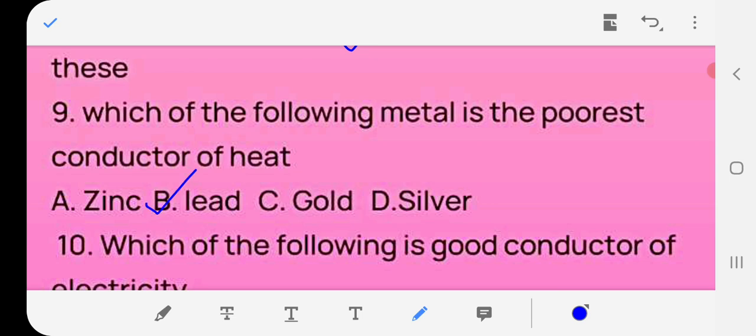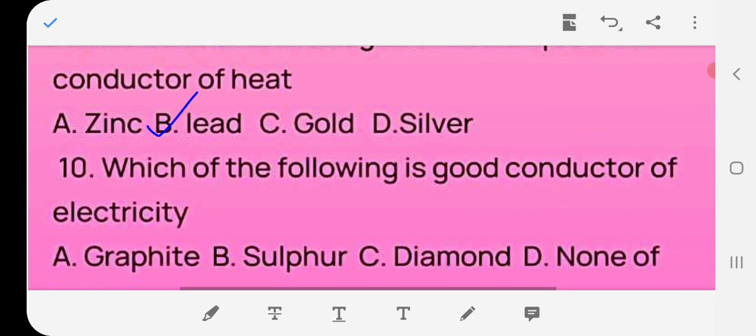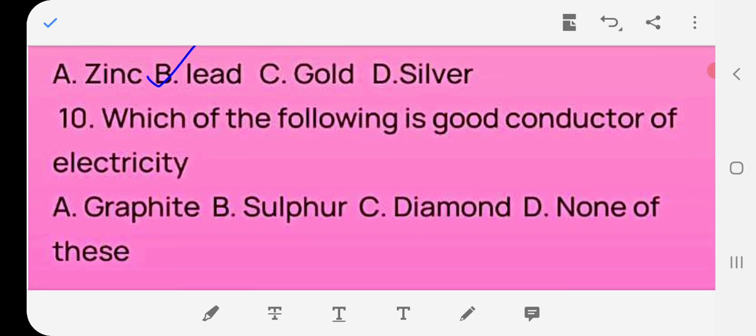Question number ten: which of the following is good conductor of electricity? A. graphite, B. sulfur, C. diamond, D. none of these. The answer is A, graphite. If you have any problem, you can ask me.